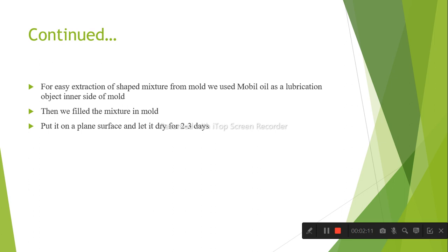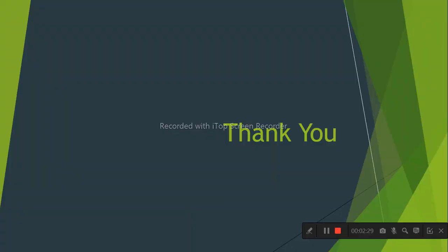Fourth, to make a brick we put the mixture into a specific shape mold. For easy extraction, we apply mobile oil as lubrication on the inner side of the mold, then fill it with the mixture. Finally, place it on a plain surface and let it dry for two to three days. Thank you so much guys — please follow, share, and subscribe to my YouTube channel. Take care!